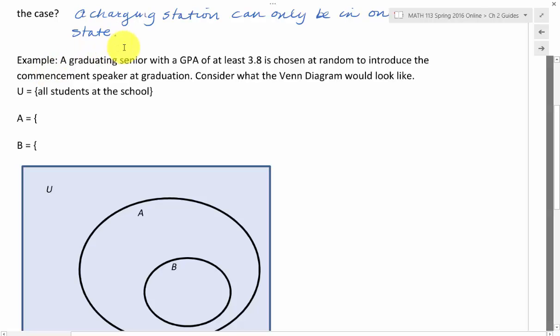Here's another example of Venn diagrams. A graduating senior with a GPA of at least 3.8 is chosen at random to introduce the commencement speaker at graduation. Consider what the Venn diagram would look like.